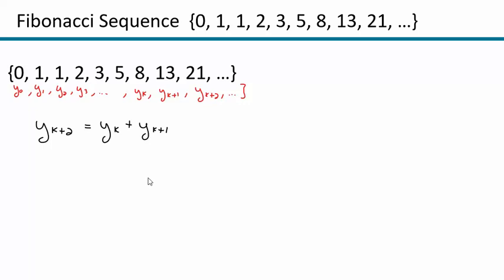Now, if I wanted to figure out the 100th term of the Fibonacci sequence, I could just keep adding and adding. But is there a quicker way? Is there some formula I could use to find the 100th term, or any generic term? That's really the question we want to answer.